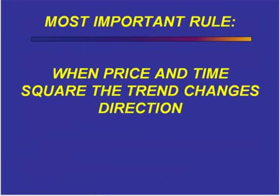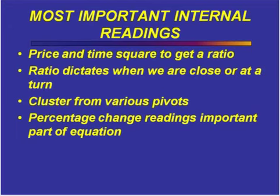Most people think of retracements according to price. So the most important rule that we have — and it's not my rule, this is Gann's rule — is when price and time square, the trend changes direction. Remember that. There are many manifestations of it, and one of the manifestations that we use is ratio work. A ratio dictates when we are close to or at a turn.